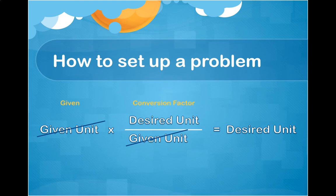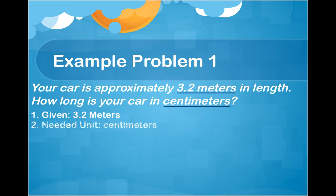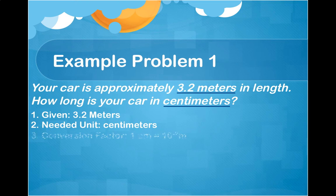Let's apply this to an actual problem. Your car is approximately 3.2 meters in length. How long is your car in centimeters? We start with what we are given: 3.2 meters. We need to find centimeters — that's our needed unit. What conversion factor can we use? Looking at the chart, for every 1 centimeter there are 10 to the negative 2 meters. 'Centi' means 10 to the negative 2, so 1 centimeter equals 10 to the negative 2 meters. This is our mathematical conversion factor.